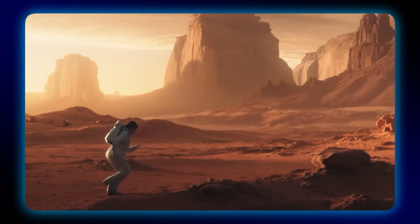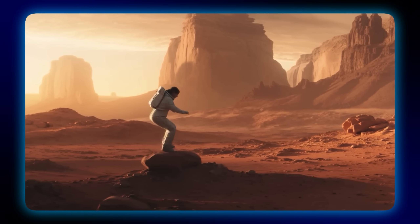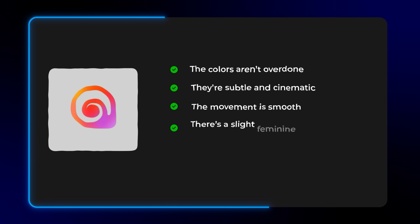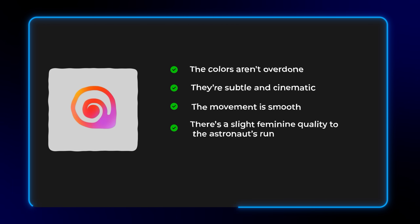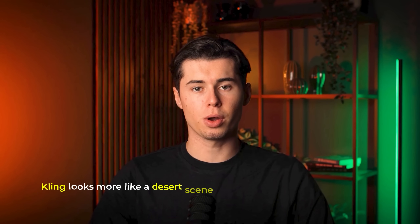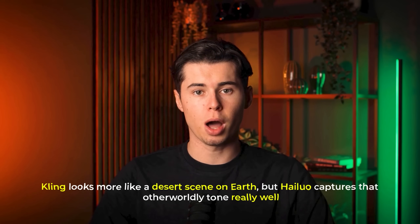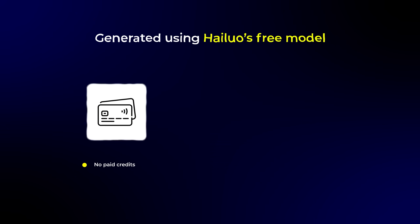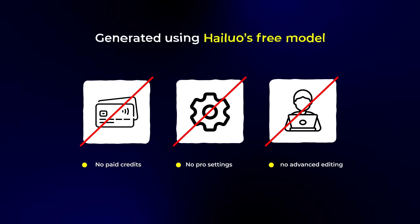Now let's take a look at Hilo's video. The colors aren't overdone — they're subtle and cinematic. The movement is smooth, and there's even a slight feminine quality to how the astronaut runs, which is impressive coming from AI. The environment itself feels the most like Mars. Kling looks more like a desert scene on Earth, but Hilo captures that otherworldly tone really well, from the lighting to the depth of the background. And just to be clear, this was generated using Hilo's free model — no paid credits, no pro settings, and no advanced editing. With most other tools, you'd either have to upgrade to a paid plan or keep adjusting your prompt to get something like this, but with Hilo I just pasted it in and got this result immediately.